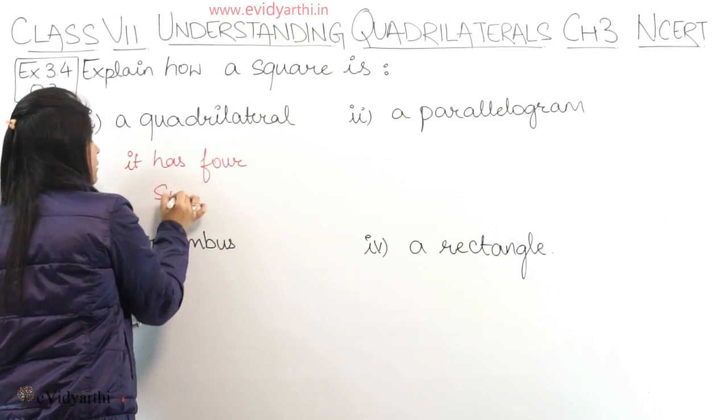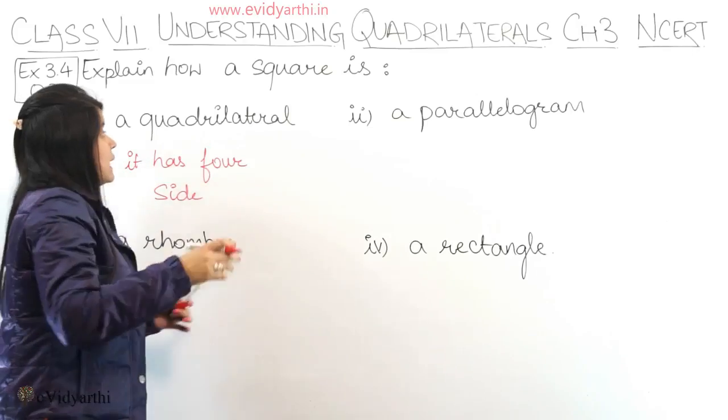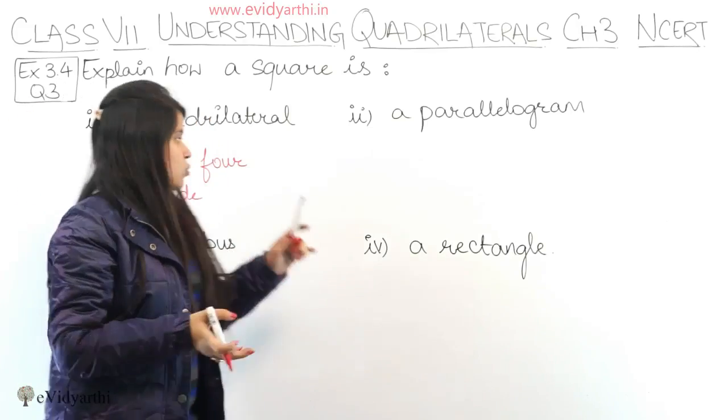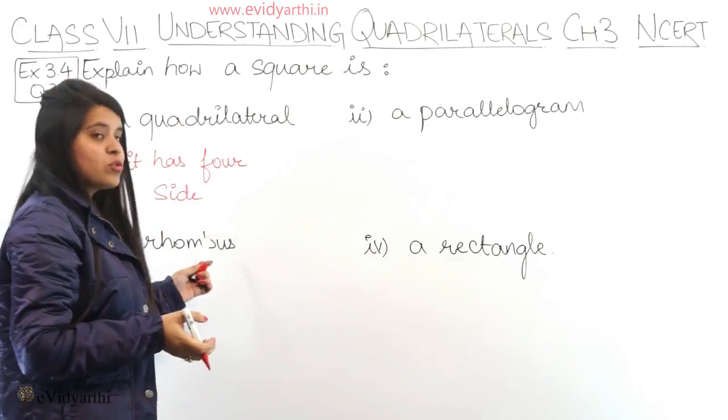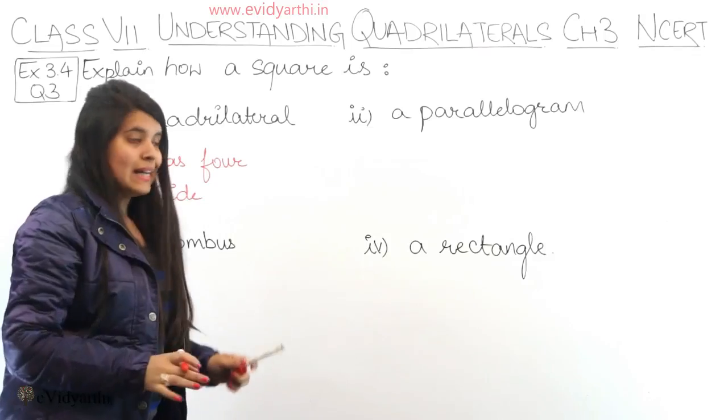Because if we define a quadrilateral, we say a figure that has 4 sides. So square में 4 sides होती हैं — so it is a quadrilateral.